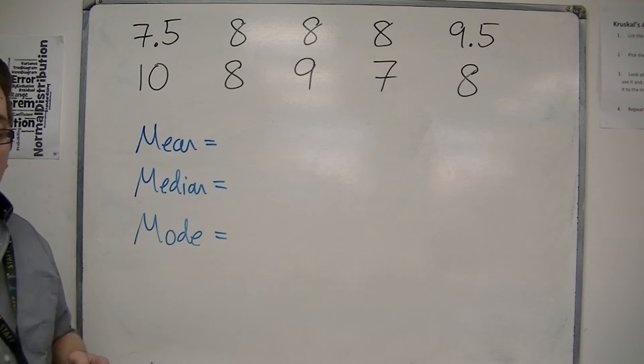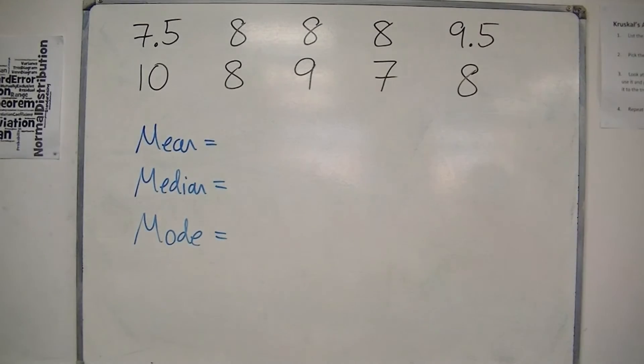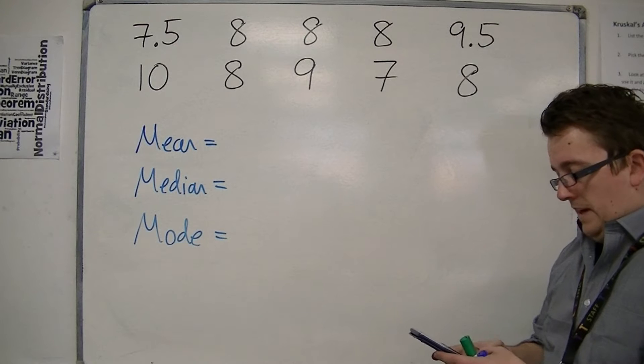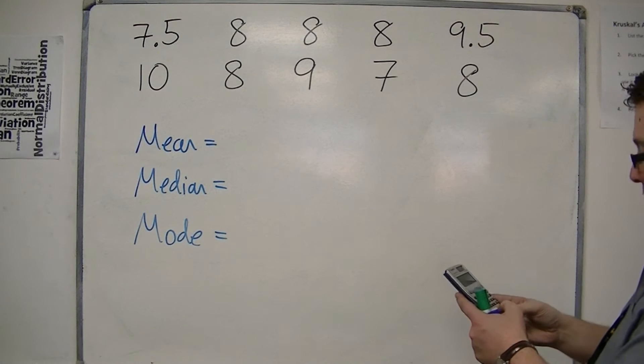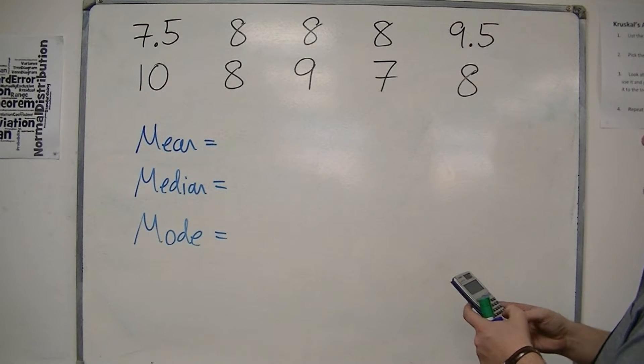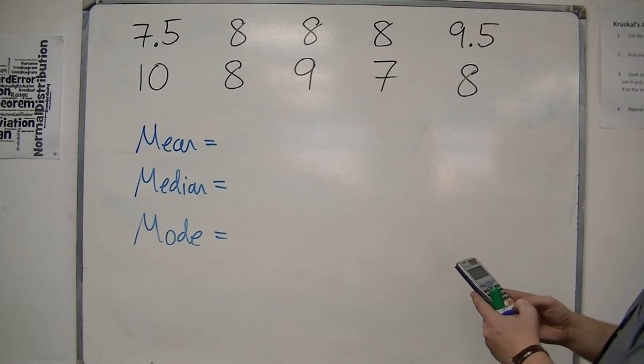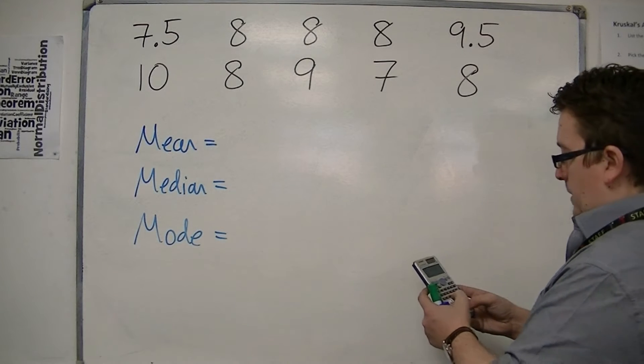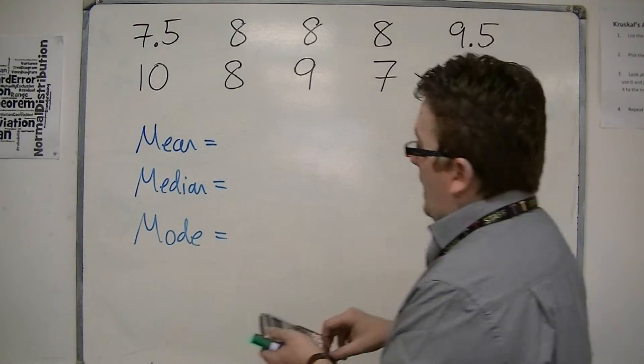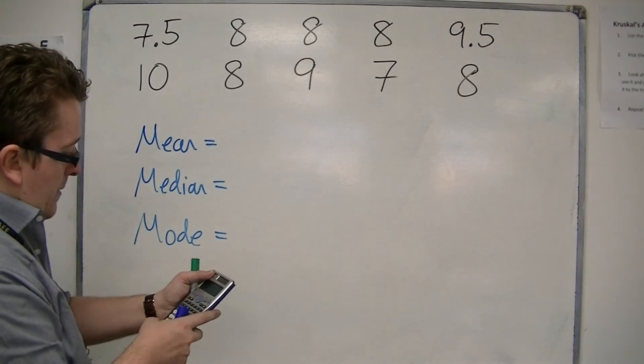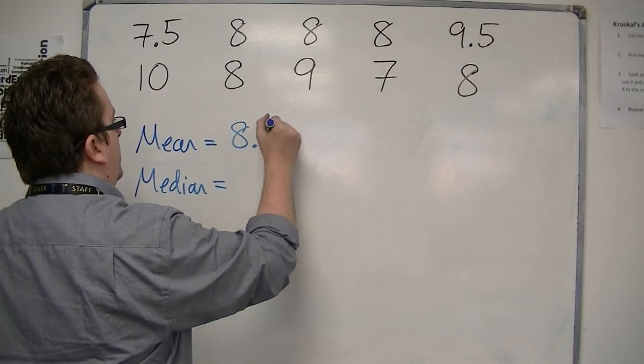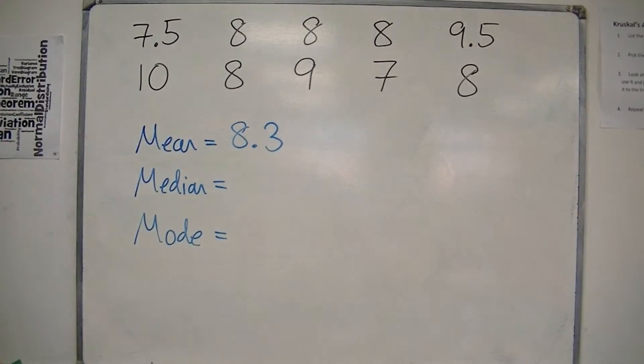So, first of all let's find the mean. So we know how to find the mean now. We add all the numbers together and divide by how many there are. So we get 7.5 plus 8 plus 8 plus 8 plus 9.5 plus 10 plus 8 plus 9 plus 7 plus 8. So that would be 83 and then we divide that by 10 and we get 8.3. So the mean is 8.3.